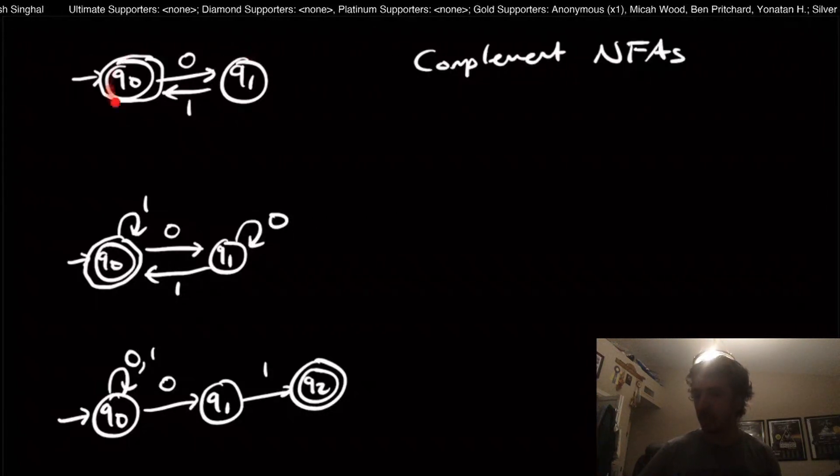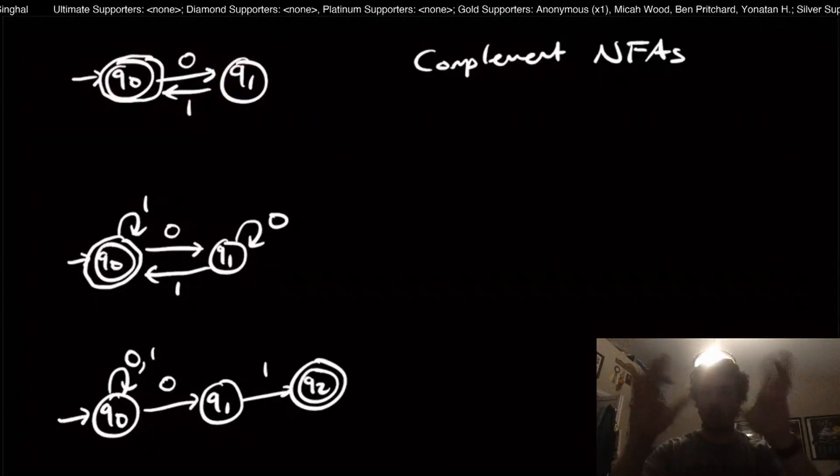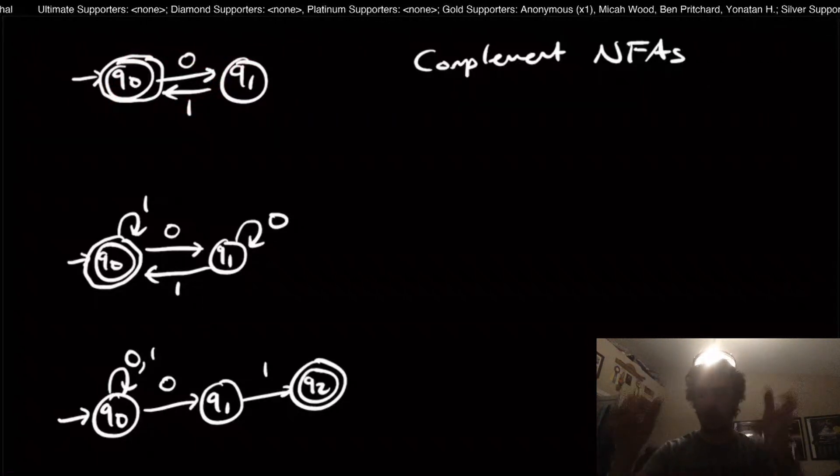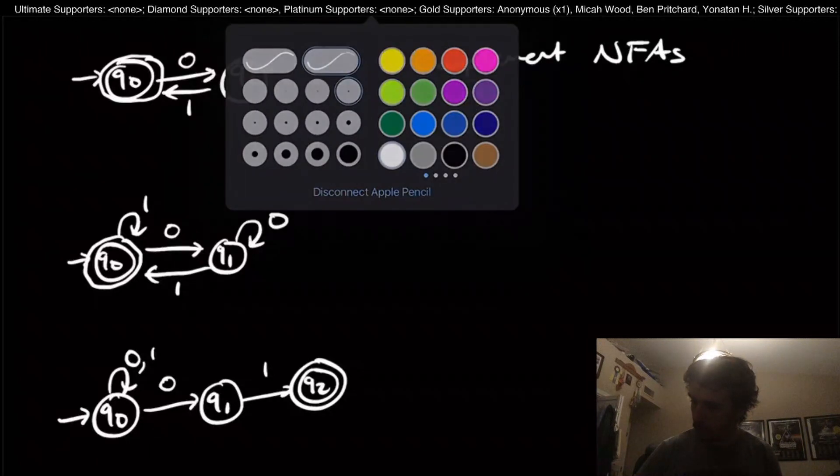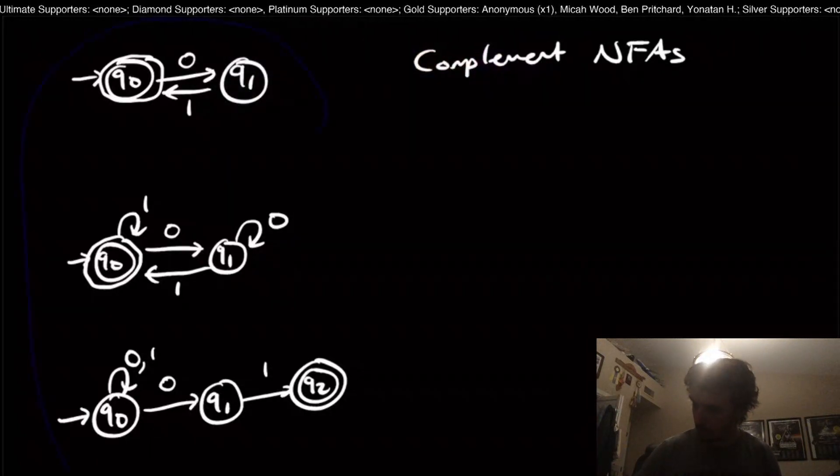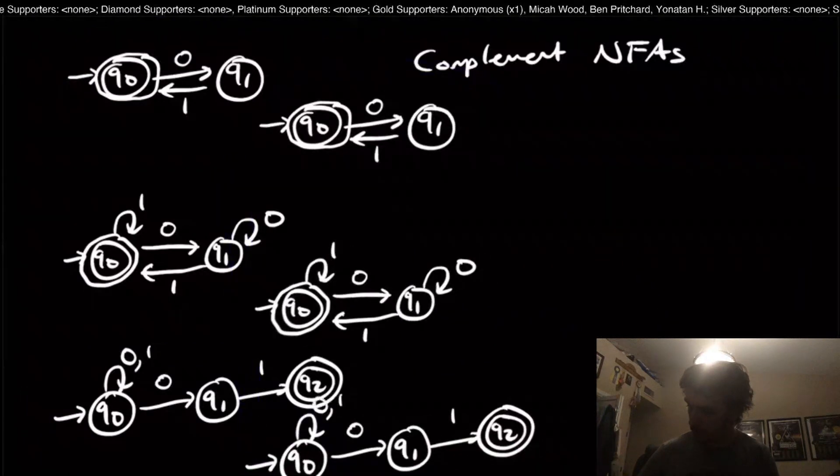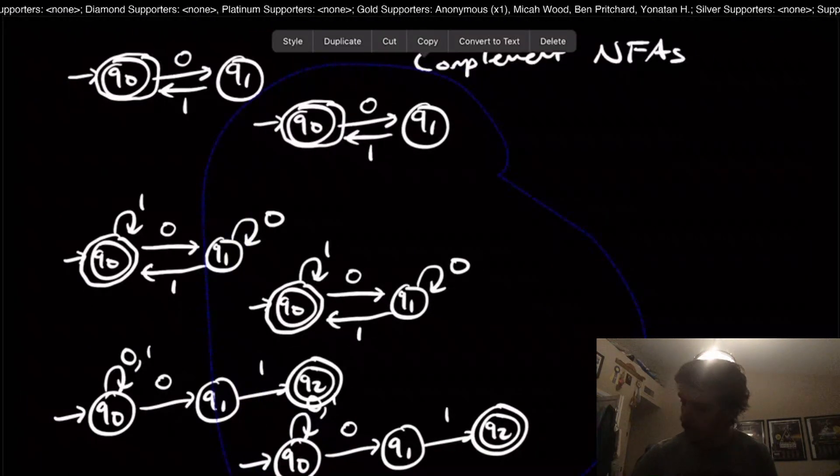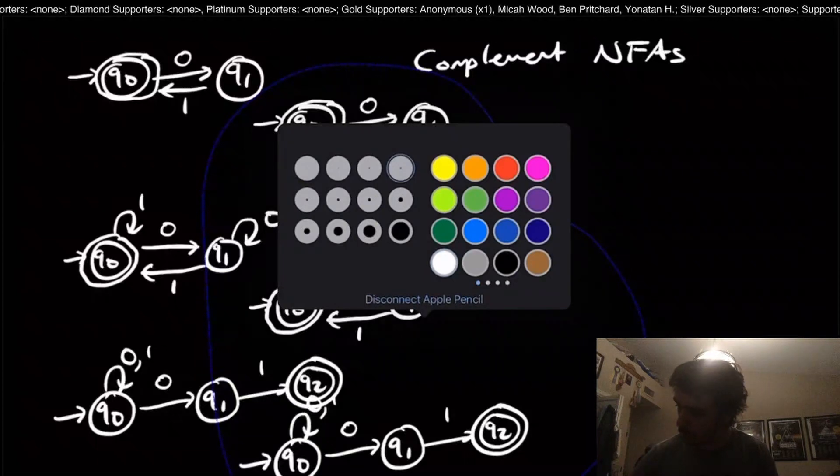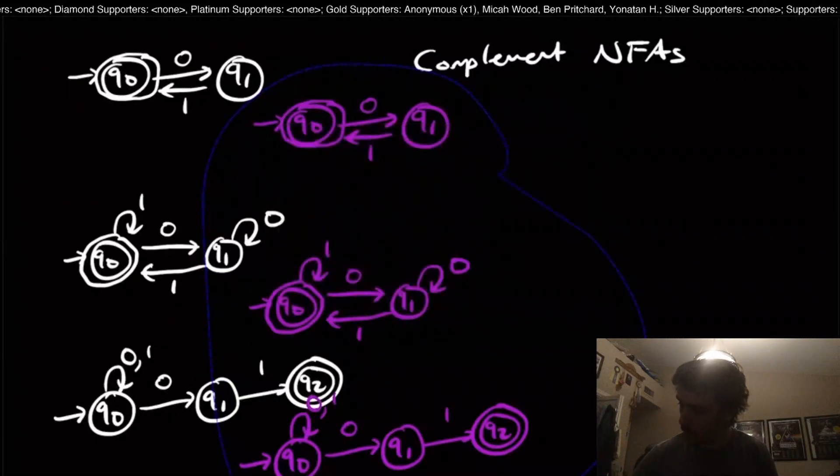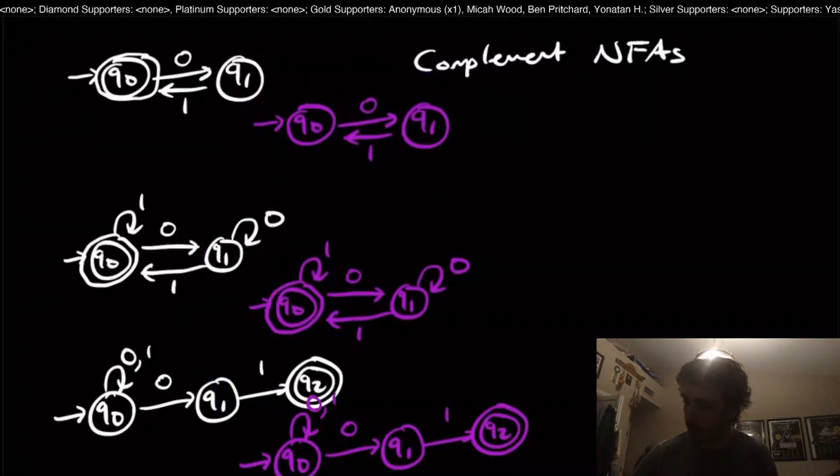What I want to do is form the complement machines. What I mean by this is to take these machines and swap which states are final and which ones are not final. I'm going to make a quick copy of all of these and convert them all to purple color so that I know it's the copy.